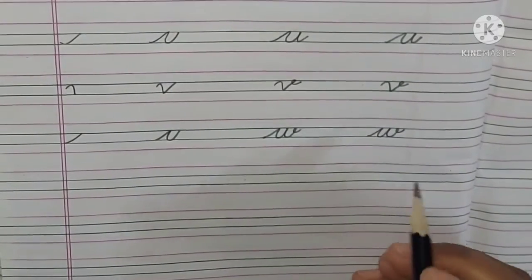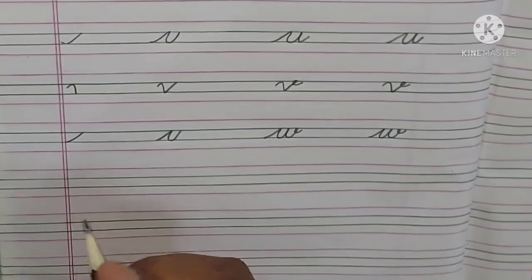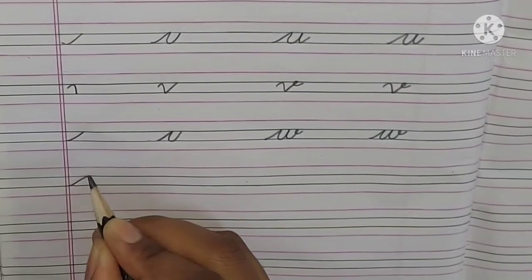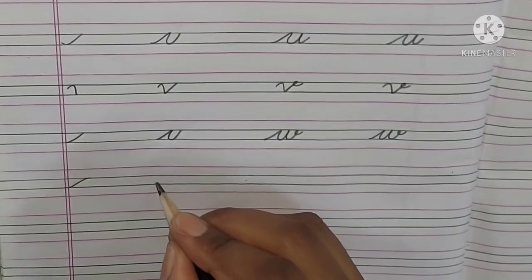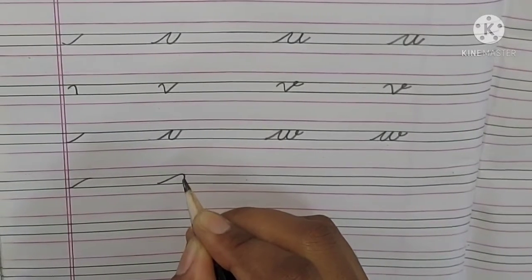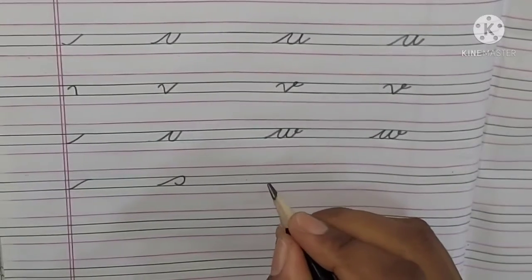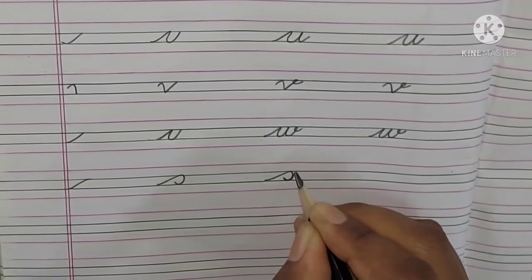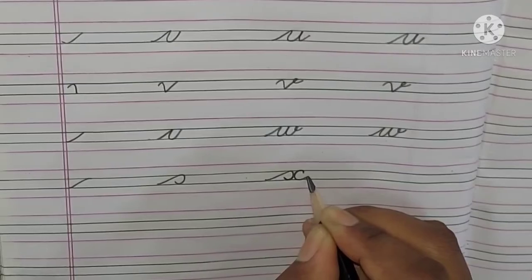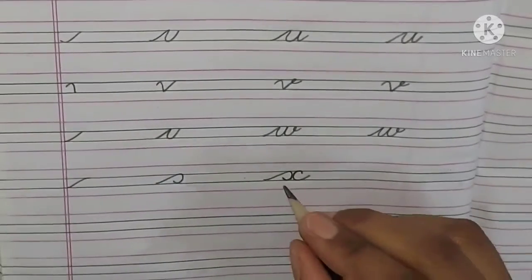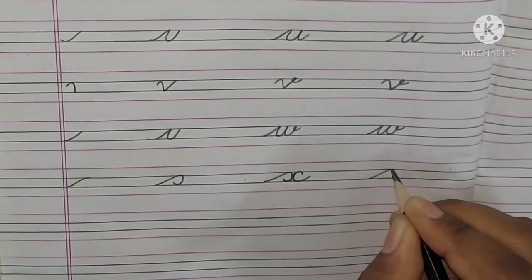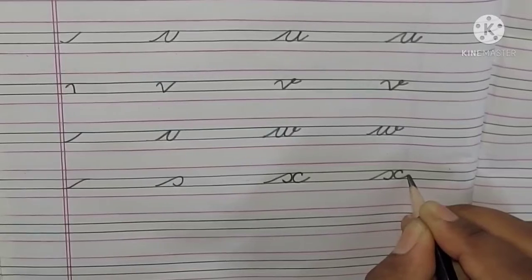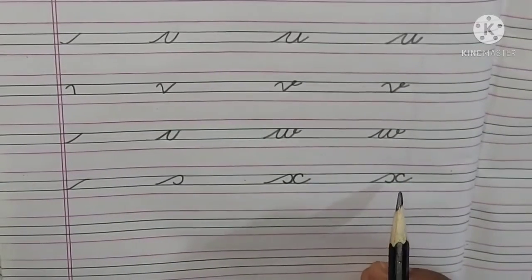After W, what comes? X. For X, we also start from the third line. Third line to second line like this, then make a curve. Go from the third line to the second line, make a curve, then on the opposite side curve it the other way. Once again — third line to second line, make a curve, then without lifting the pencil, make the other side like this. This is your small letter X.